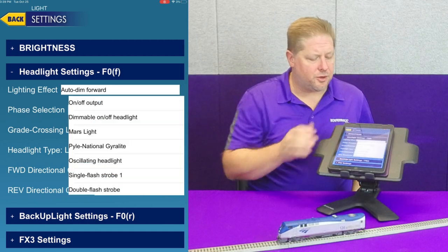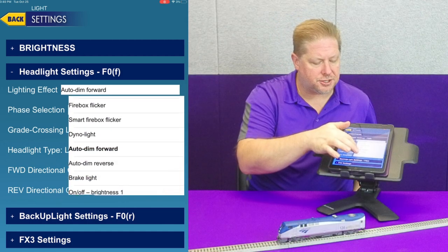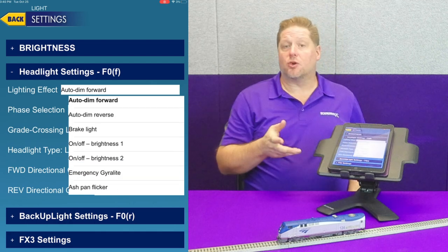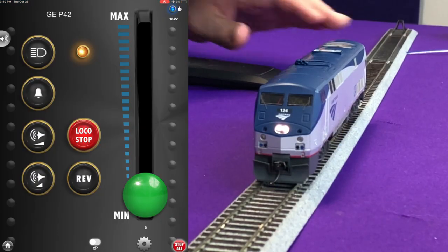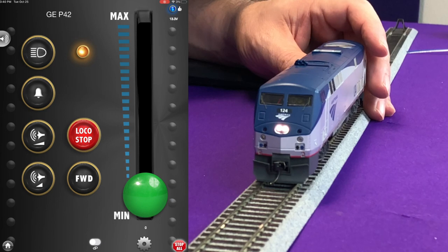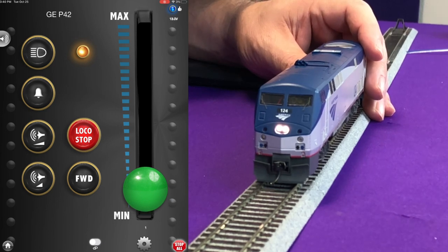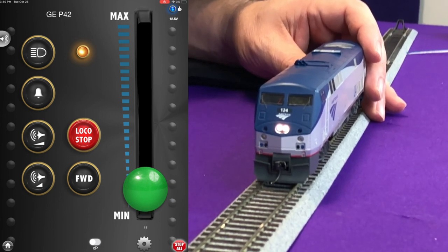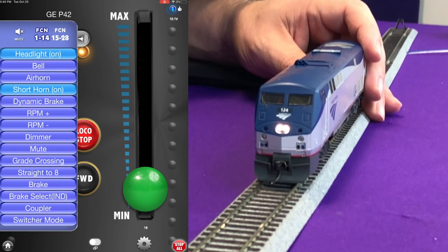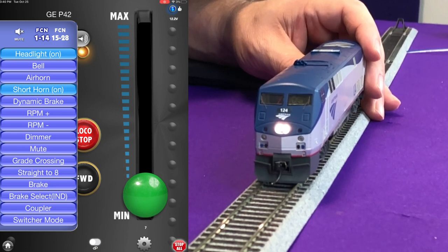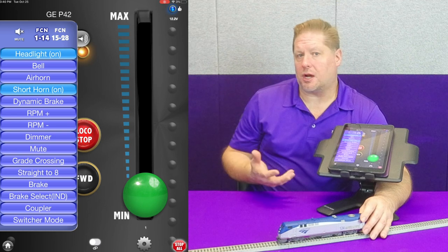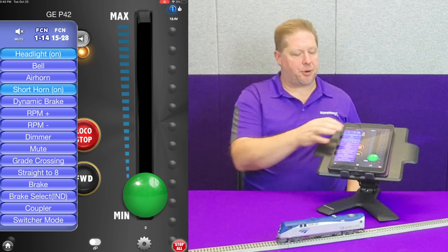Next is the brake light — a really cool lighting effect. When you're moving the locomotive forward, the light is on but dim. When you trigger the F11 brake, the light brightens up. This would be a great effect for trolleys, streetcars, small gas critters, trucks, or anything like that where you want that brake light ability.